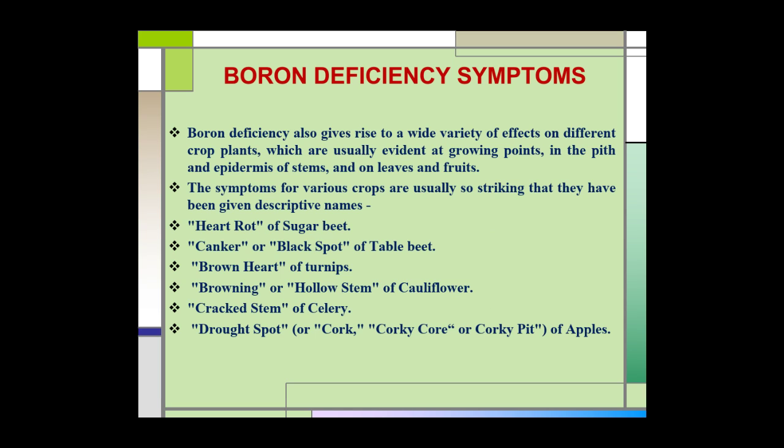Boron deficiency also gives rise to a wide variety of effects on different crop plants, evident at growing points in the pith, epidermis of stems, and on leaves and fruit. The symptoms for various crops are usually so striking that they have been given descriptive names like heart rot of sugar beet, canker or black spot of table beet, brown heart of turnips, browning or hollow stem of cauliflower, cracked stem of celery, and drought spot, cork, or corky pit of apples.